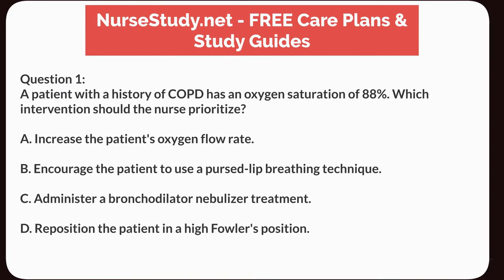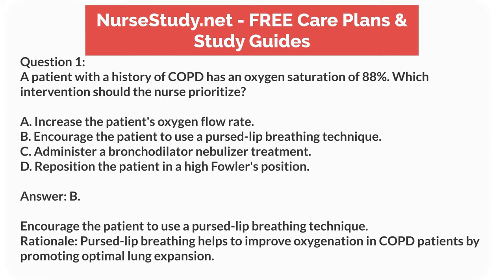Question 1. A patient with a history of COPD has an oxygen saturation of 88%. Which intervention should the nurse prioritize? A. Increase the patient's oxygen flow rate. B. Encourage the patient to use a pursed lip breathing technique. C. Administer a bronchodilator nebulizer treatment. D. Reposition the patient in a high-Fowler's position. Answer: B. Encourage the patient to use a pursed lip breathing technique. Rationale: Pursed lip breathing helps to improve oxygenation in COPD patients by promoting optimal lung expansion.